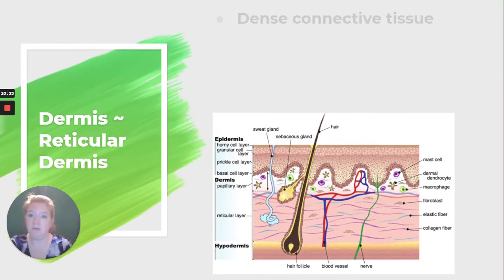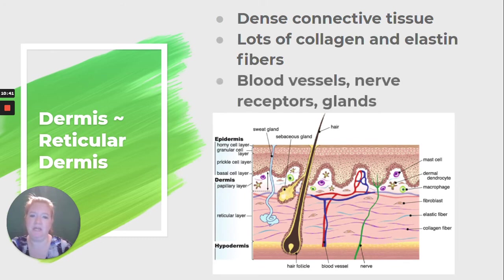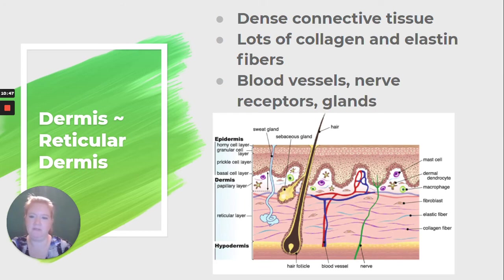The reticular dermis is dense connective tissue with lots of collagen and elastin fibers. It contains blood vessels, nerve receptors, and glands — a lot going on in the reticular dermis.